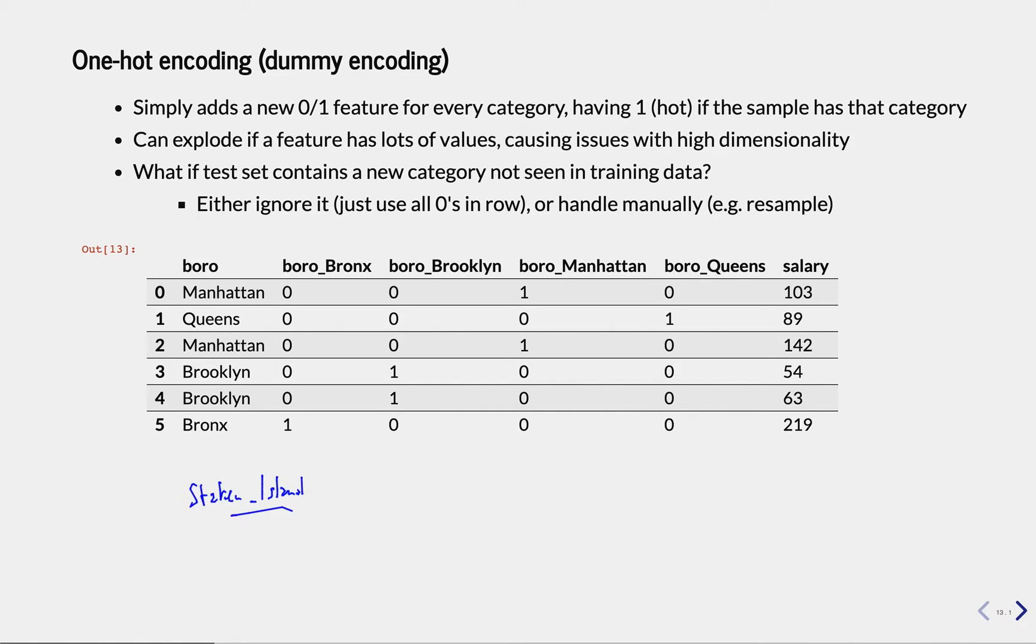That only occurs in the test set, not the training set, which means that whenever the algorithm encounters that and wants to transform this, it doesn't know what to do and it crashes.